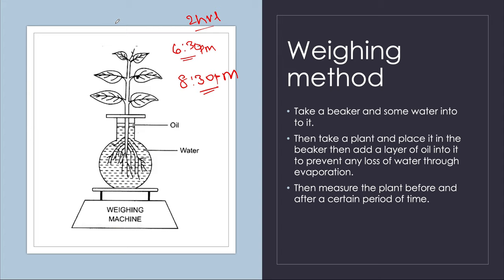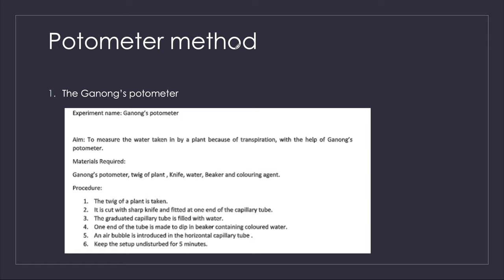Let's say when you measured at 6:30 PM the plant was 1 kg. When you measure it at 8:30 PM it would be at 800 grams. So there is a 200-gram loss of water due to transpiration. That is the weighing method. Now we'll talk about the potometer method.